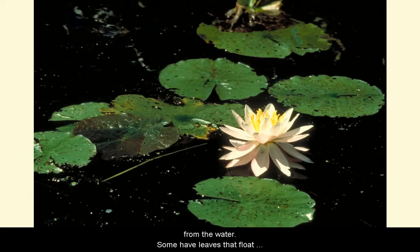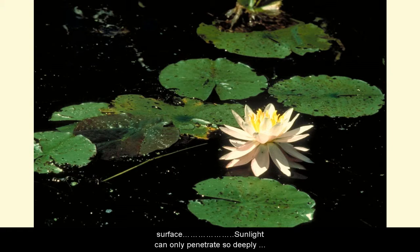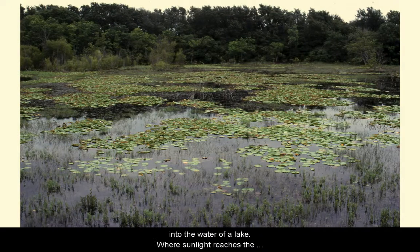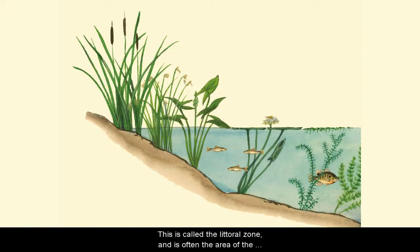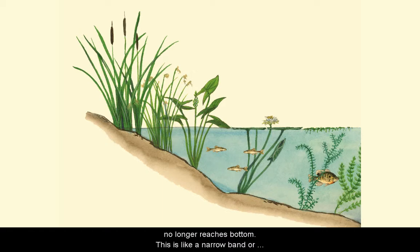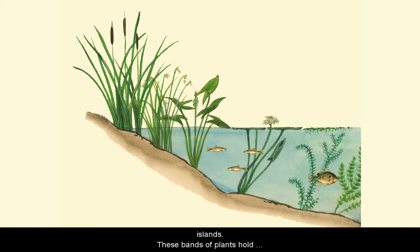Water plants have special adaptations that help them live in their underwater environment. Waxy or slimy coatings protect them from drying out when water levels drop. Porous stems or leaves let them absorb minerals right from the water. Some have leaves that float on the surface, while others have the entire plant floating on the surface. Sunlight can only penetrate so deeply into the water of a lake. Where sunlight reaches the bottom, rooted plants can grow. This is called the littoral zone, and is often the area of the lake from the shoreline outward to the point sunlight no longer reaches the bottom.